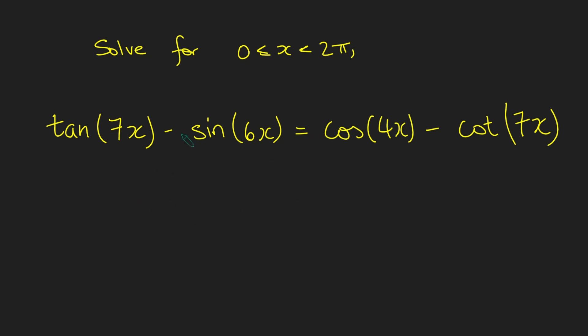Hi, thanks for joining me today. I'm going to be solving this equation here. We've got tan of 7x minus sine of 6x equals cos of 4x minus cot of 7x. And of course, this is without a calculator. If you want to have a go at solving this equation, pause the video now and give it a go for yourself. I'm going to dive straight into a solution.